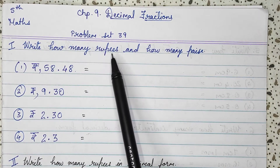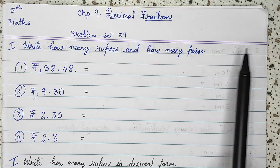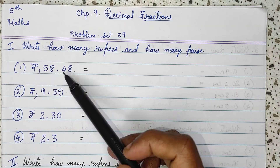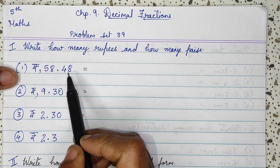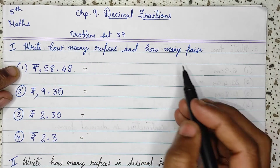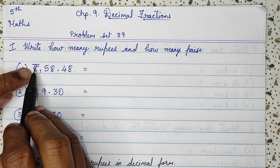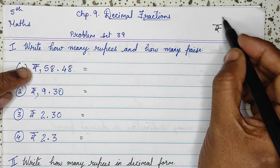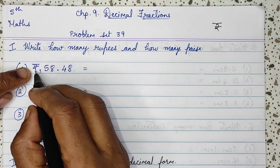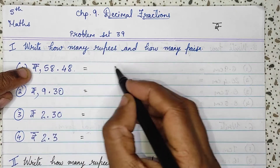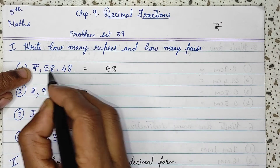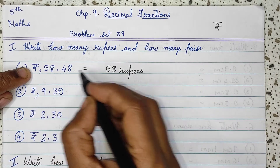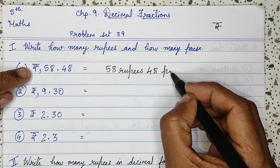First question: write how many rupees and how many paise. Here they have given in numerical form, so we have to show how many rupees and how many paise there are. Here this R is the Hindi alphabet R — this is the Indian symbol for Indian currency. So, 58 rupees and 48 paise.